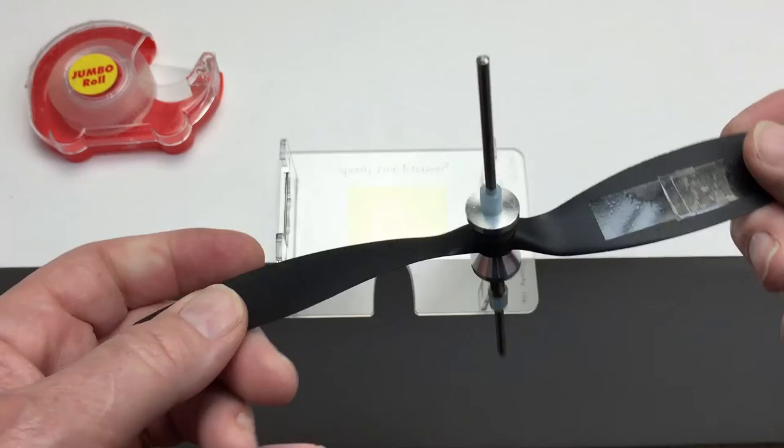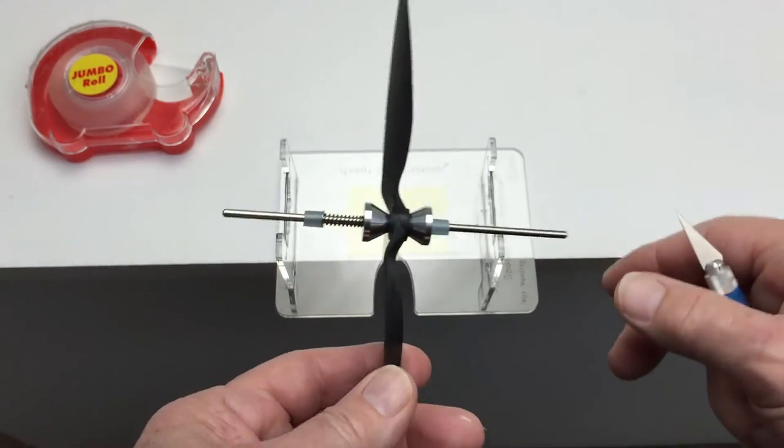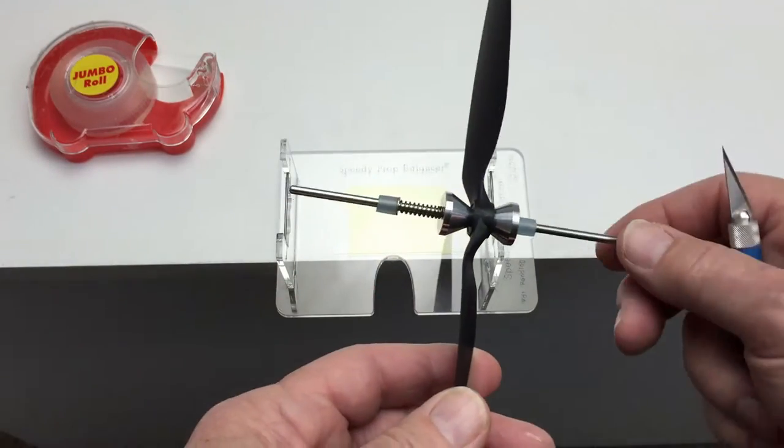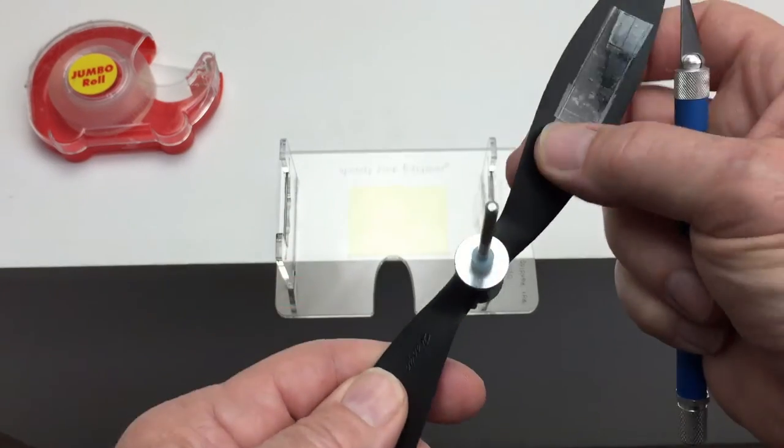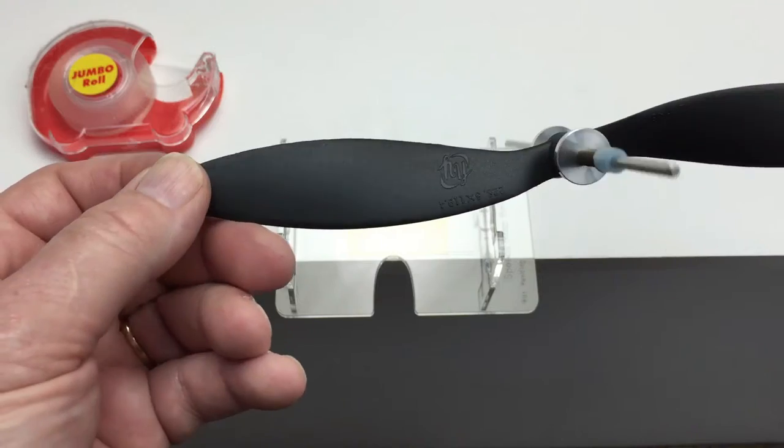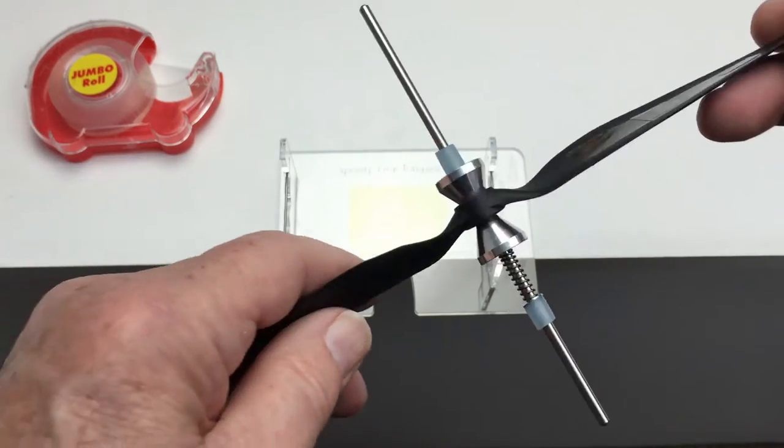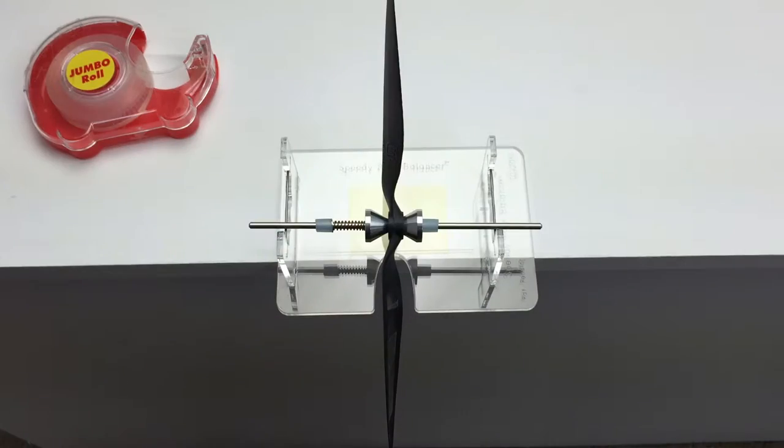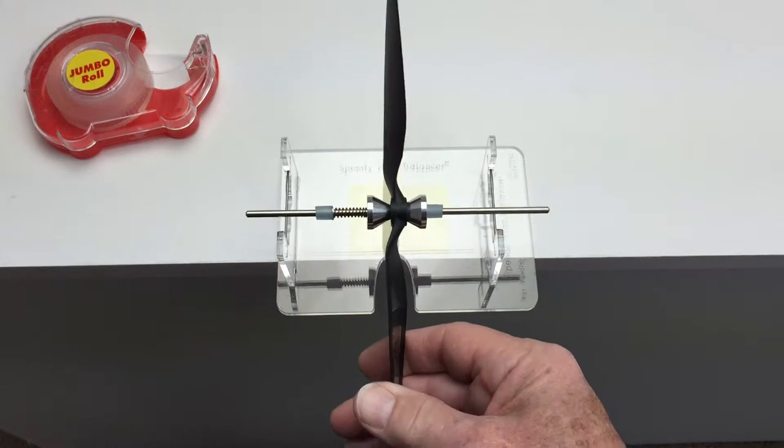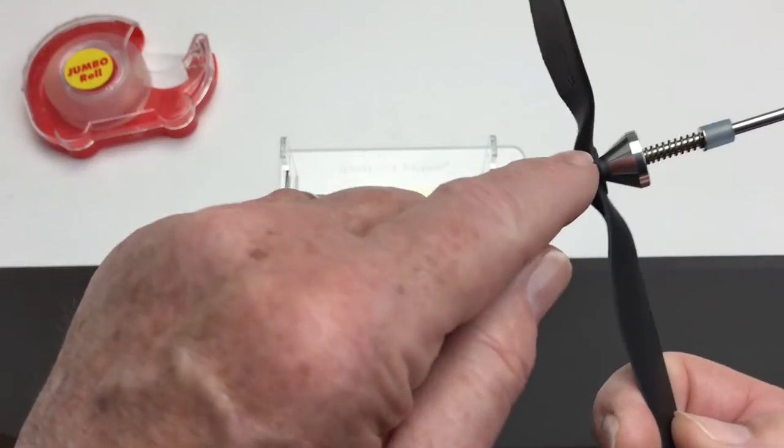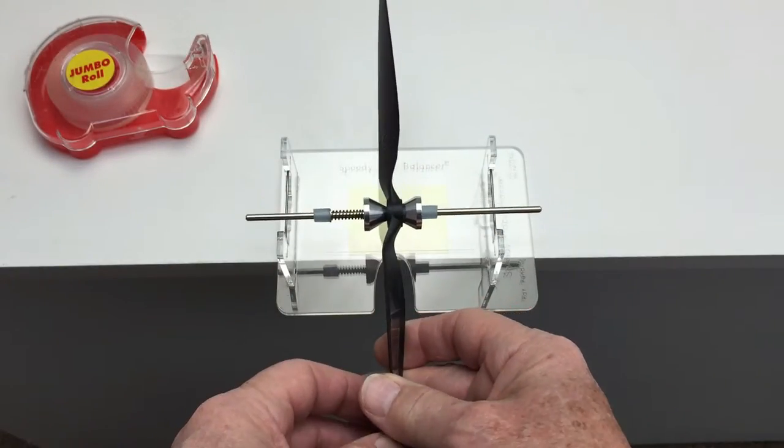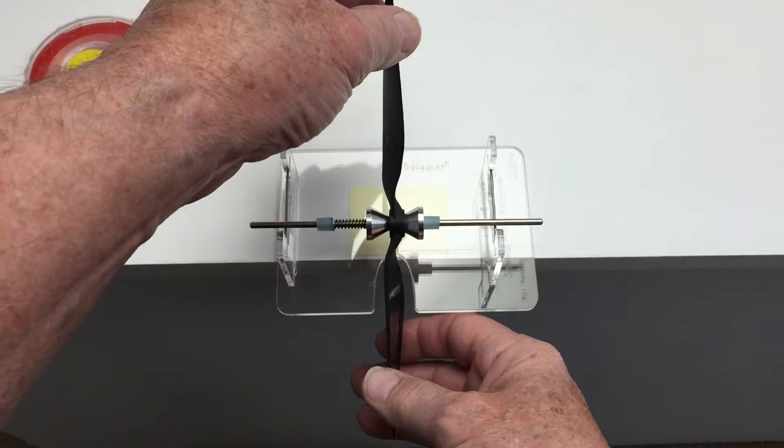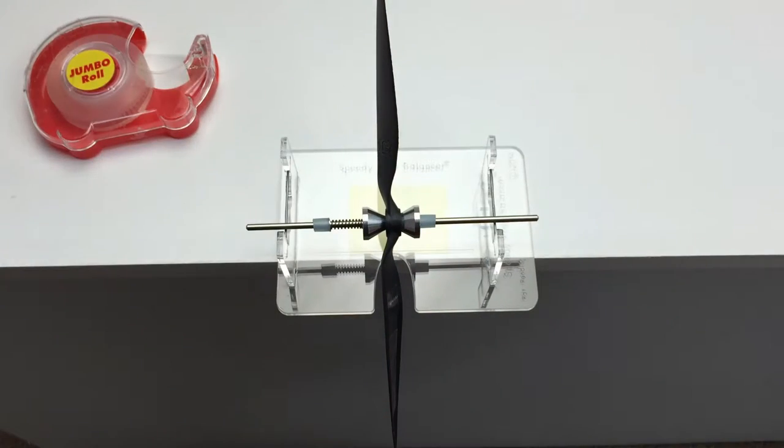This same procedure would have to be done with about any balancer you use, but the sensitivity of the Speedy Prop Balancer makes it a little more delicate. But when you get through you've got a prop that you know is balanced from end to end. This particular prop shows to be pretty well dynamically balanced, which means that there's no heavy side to the hub here and here. The way you check that is you put the prop in a position other than straight up and down, and it should stay there.